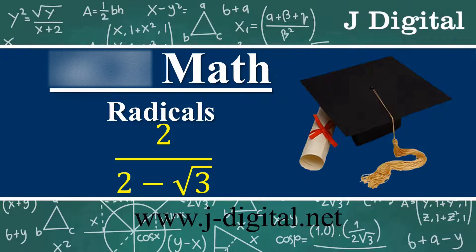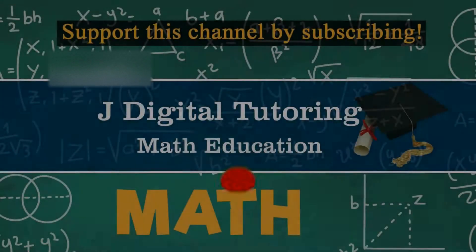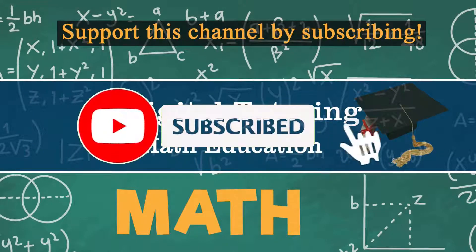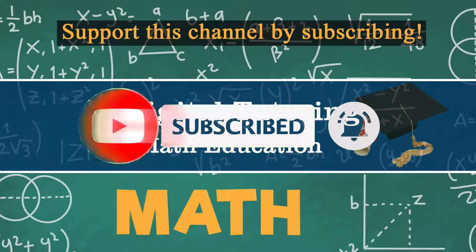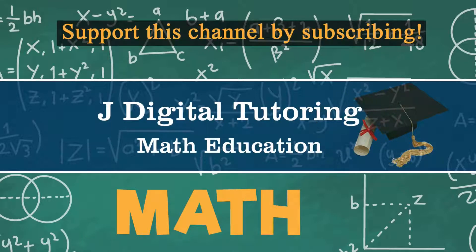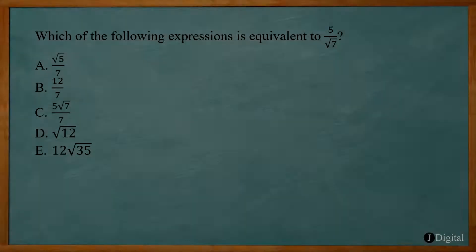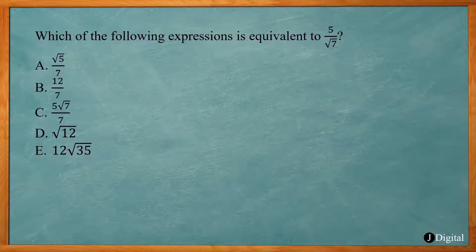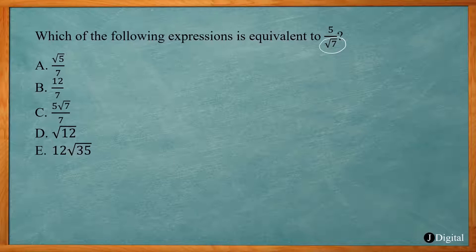In this video, I'll go over ACT math problems and deal with radicals. So the first one says which of the following expressions is equivalent to 5 over the square root of 7. Now typically, we don't want radicals in the denominator of our fractions. So what we want to do is called rationalizing the denominator.